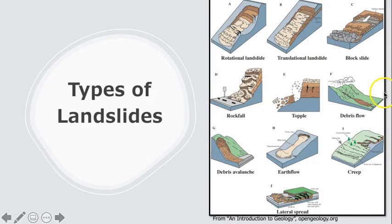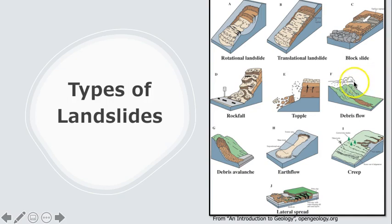This illustration provides a visual summary of each type of mass wasting. Using these illustrations, the previous table, and your assigned reading, you will identify all the mass wasting events found in the document provided on the USGS landslide handbook. This assignment will be available on Canvas. That's it for this lecture.